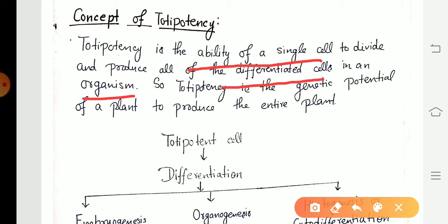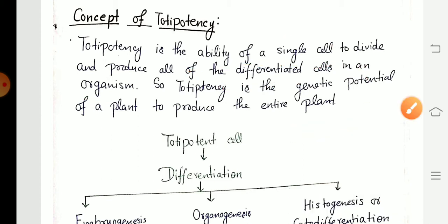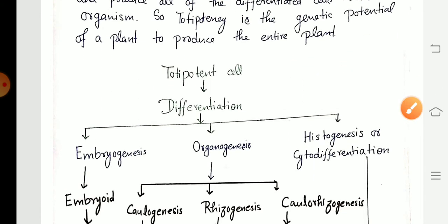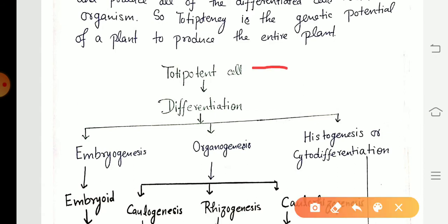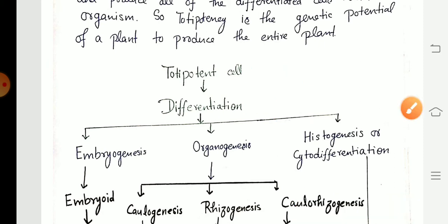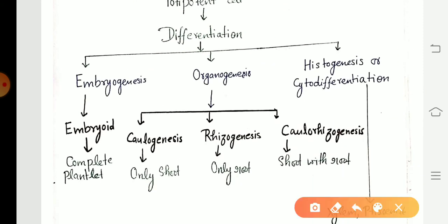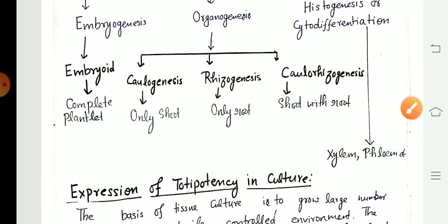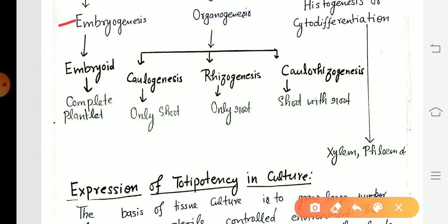From a single cell, an entire plant is generated. So next is: what is a totipotent cell? A totipotent cell is manifested through the process of differentiation. There are three processes: embryogenesis, organogenesis, and cytodifferentiation. Through the process of embryogenesis, an embryoid is developed, and from this embryoid a complete plantlet is generated.